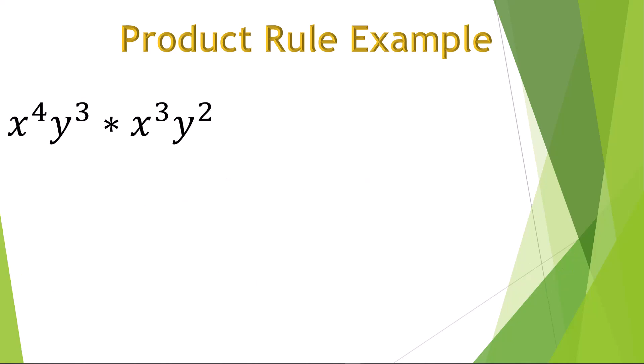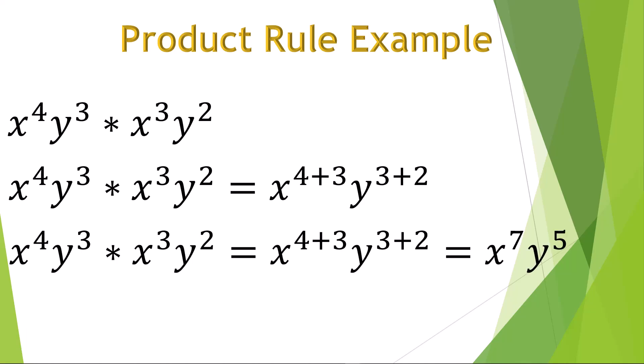Here we have two powers with different variables, each with exponents. We follow the same rule of adding the exponents, but separately for each base. The variable x adds the two exponents 4 and 3, and the variable y adds 3 and 2. With the final result, a two-part power, with x and y still separate, but with the exponents combined to make x to the 7th times y to the 5th.